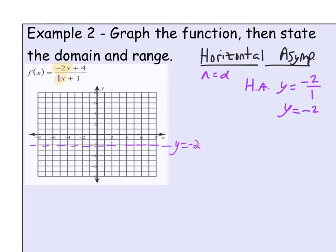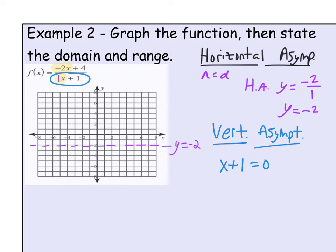For the vertical asymptote, think of it as a vertical line blocking a specific x-value. Looking at the denominator, x plus 1, we set it equal to zero: x equals negative 1. So there is a vertical asymptote at x equals negative 1. It acts like a wall — the graph will not pass through that value.